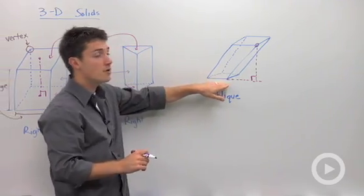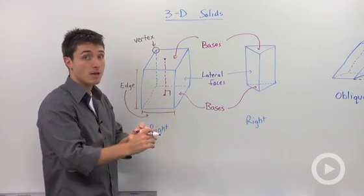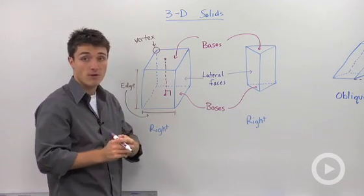If you're comparing the volume of an oblique prism and a right prism with the same bases and the same height, you're going to have the same volume.